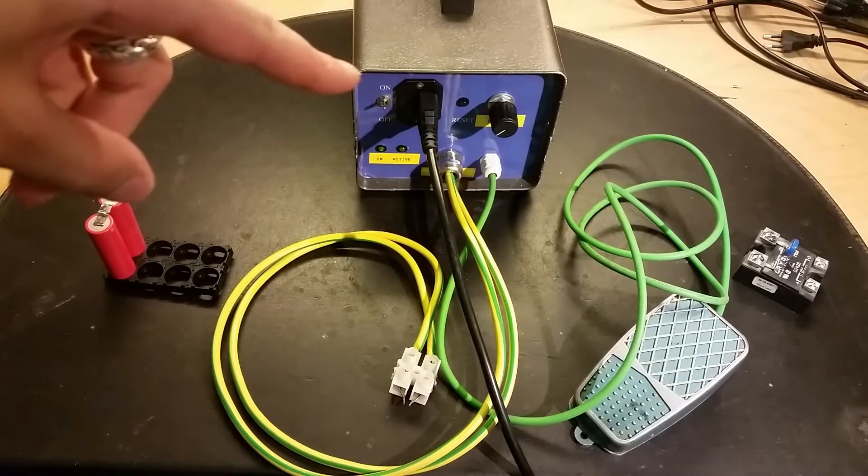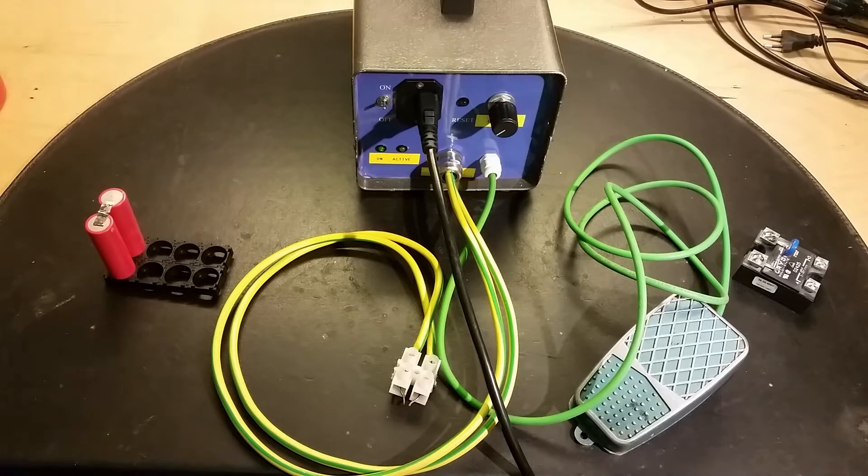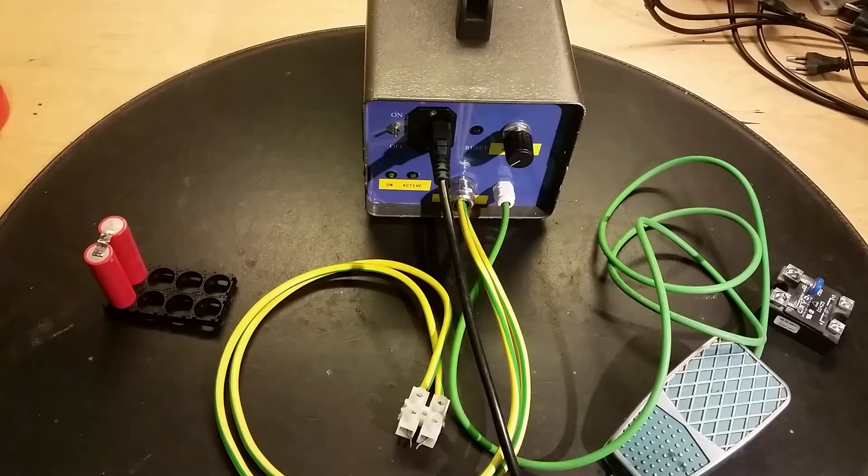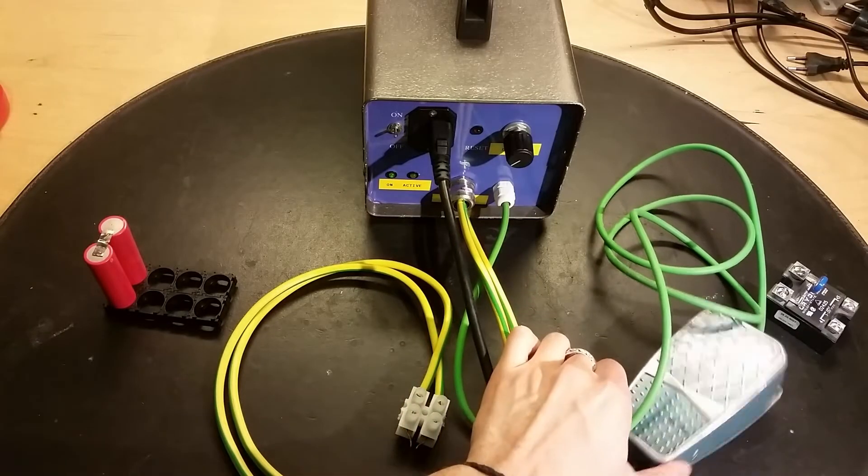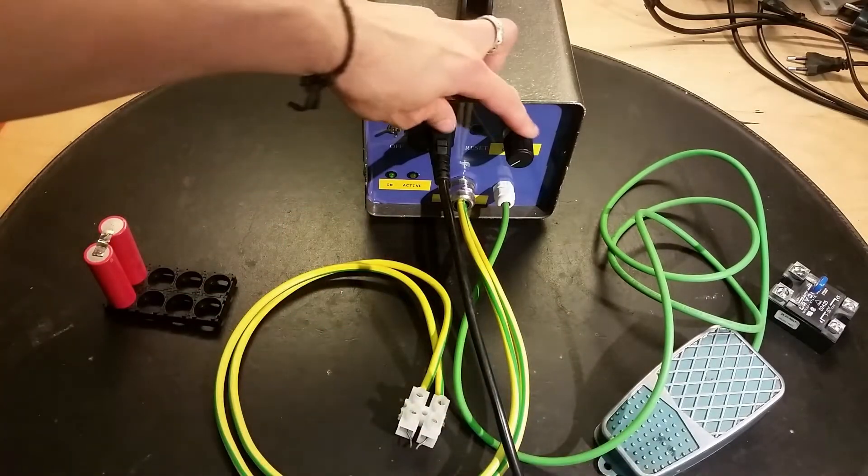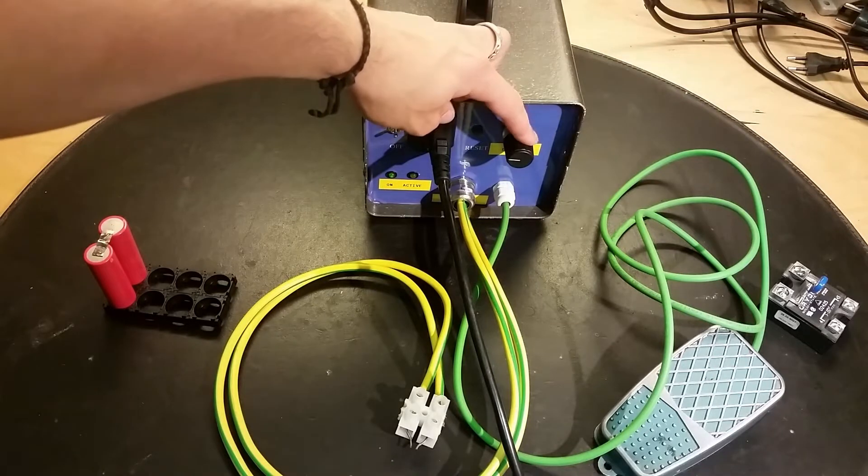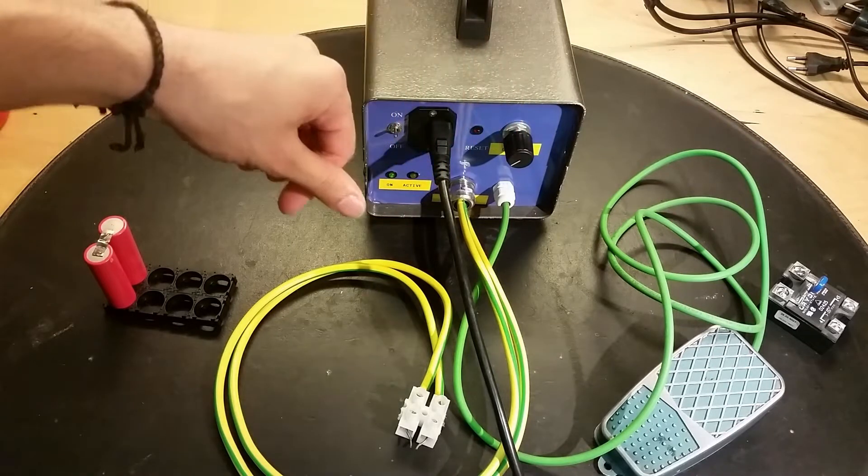Let's have a look at how I made this 18650 battery spot welder using no Arduino or microcontroller. You turn it on by pressing the foot pedal here, set the time here for how long duration the welding should last.